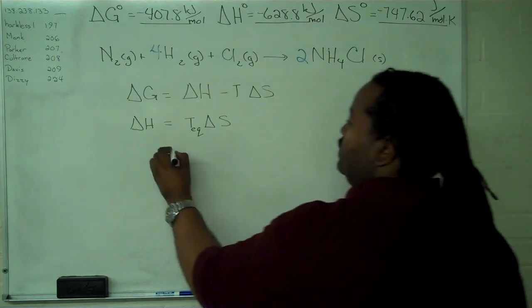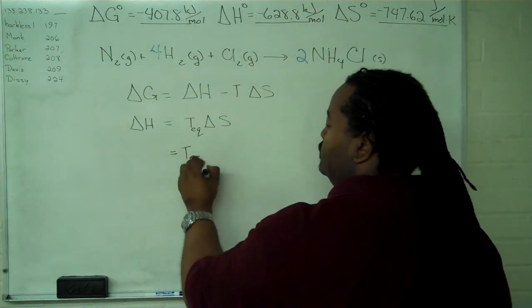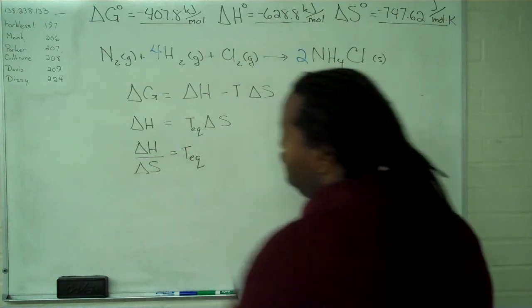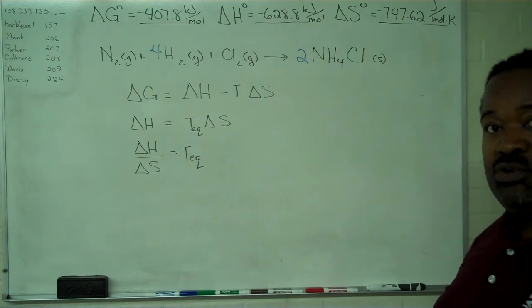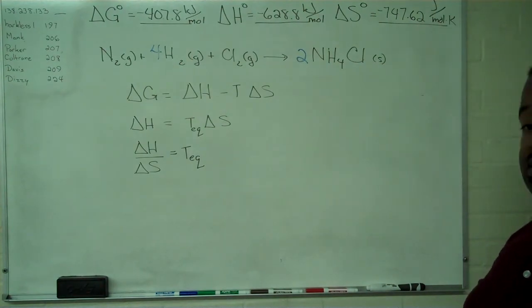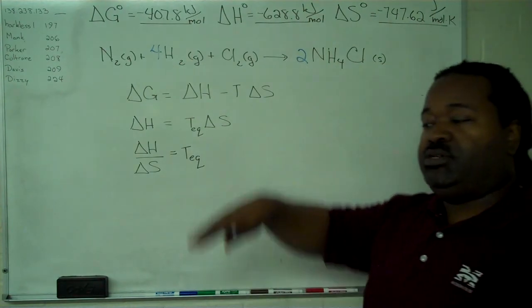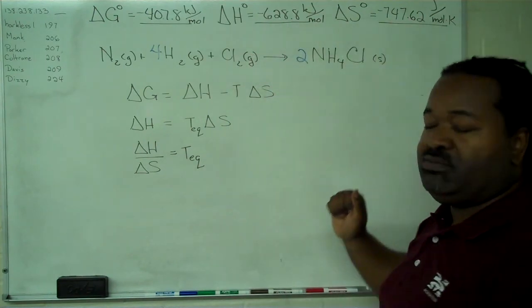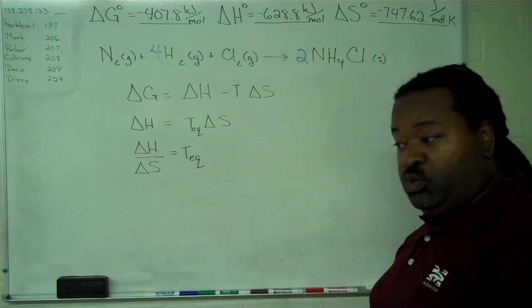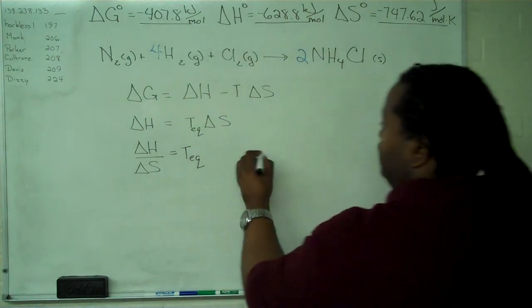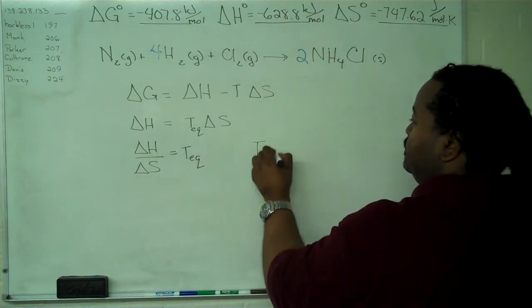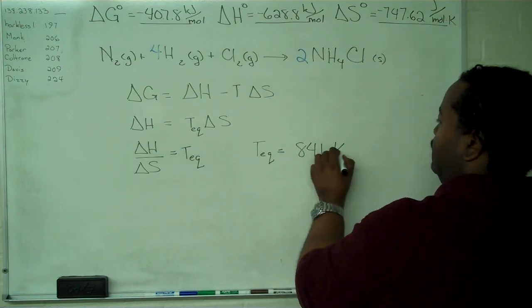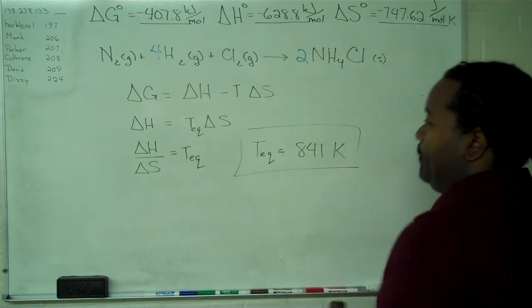To find an equilibrium temperature, we divide delta H by delta S, and that value has to be zero or greater, because temperature starts at absolute zero and goes up. If we take the values we have here, we see they have the same sign, so the division will work, and we find that our equilibrium temperature comes out to be 841 degrees Kelvin.